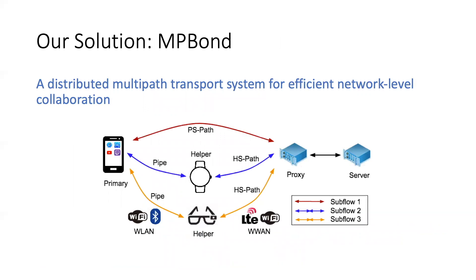To bridge this gap, we propose MPBound, a distributed multipath transport system for efficient network-level collaboration. It involves two types of devices: one primary and one or more helper devices, connected with non-relayed TCP connections called PEPs. The client application, such as a file downloader or video player, only runs on the primary. Traffic from the app is transparently intercepted by the MPBound service and scheduled to transmit either over the primary's own interface — the PS path — or through helpers with forwarding over the HS path. To be fully transparent to Internet servers, the system can introduce a proxy, which hides MPBound from remote servers by establishing single-path connections with them.